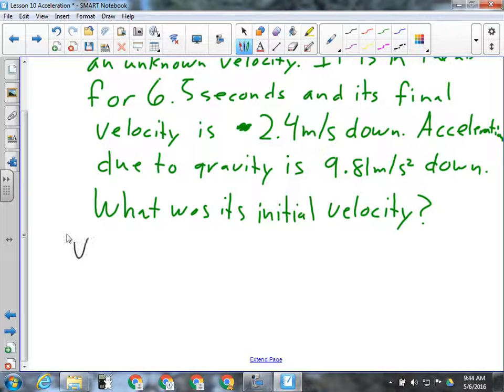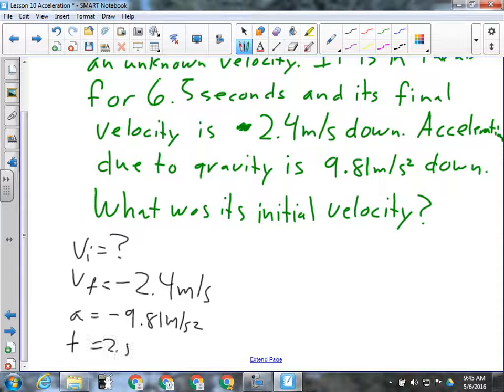So we've got to write down our givens here. Vi is unknown. It's what we're being asked to solve for. Vf is going to be negative 2.4 meters per second. I'm establishing that down is the negative direction, up is the positive direction. Our acceleration, also negative, 9.81 meters per second squared. And then we have the time as well. So time is 6.5 seconds.